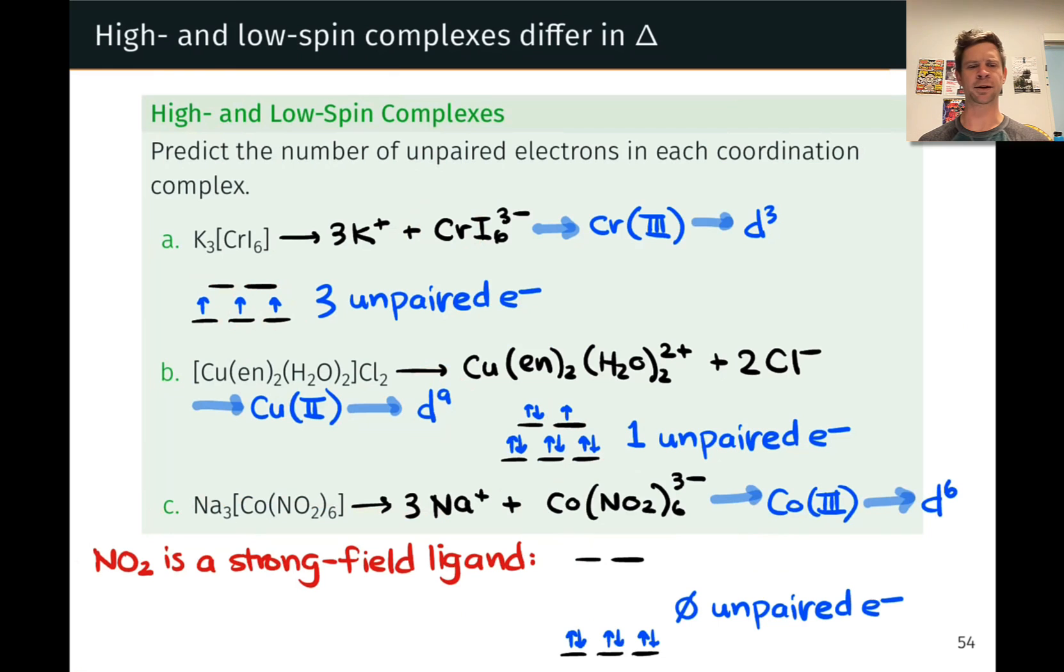Think about what would happen if we replaced NO2 with a weak field ligand like iodide. Imagine cobalt-hexaiodo-3-. What would happen in that case? How many unpaired electrons would the complex have? It's a little homework for you.